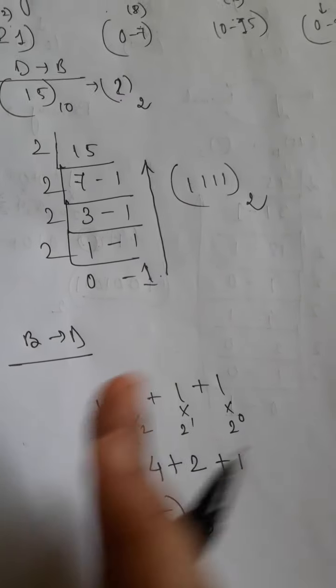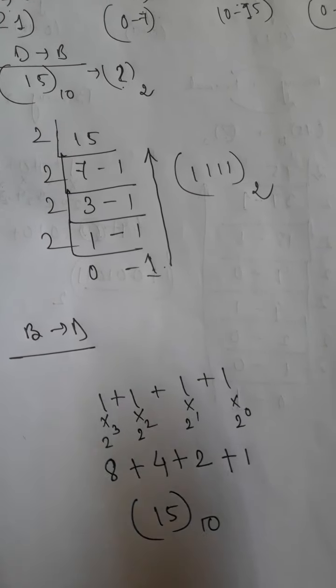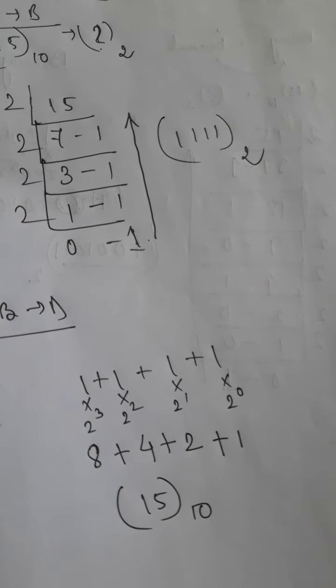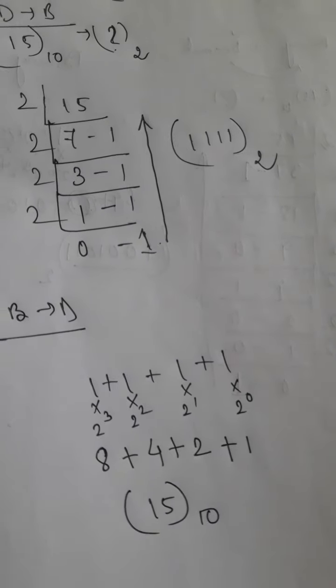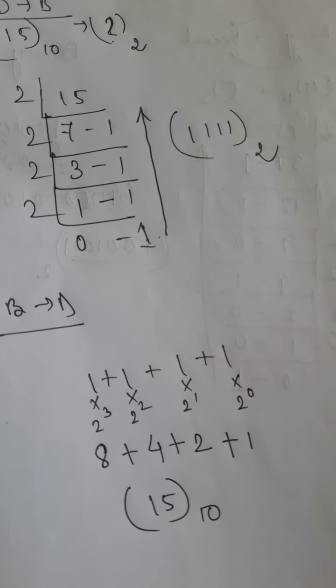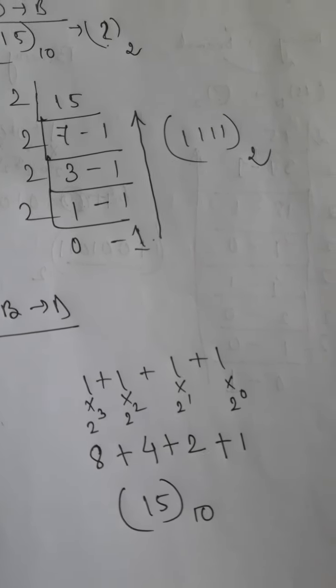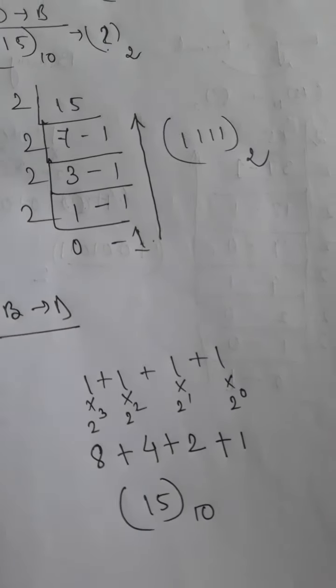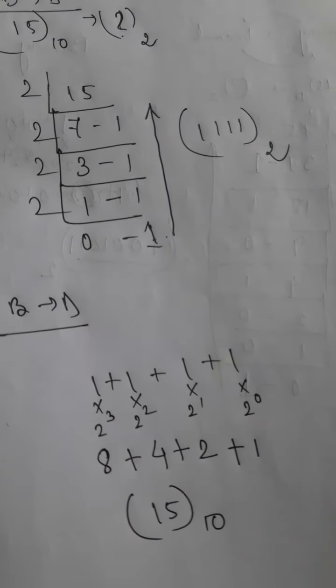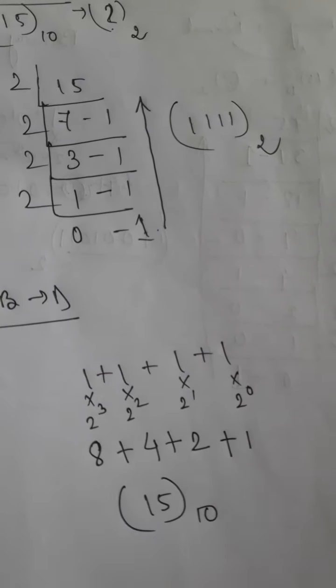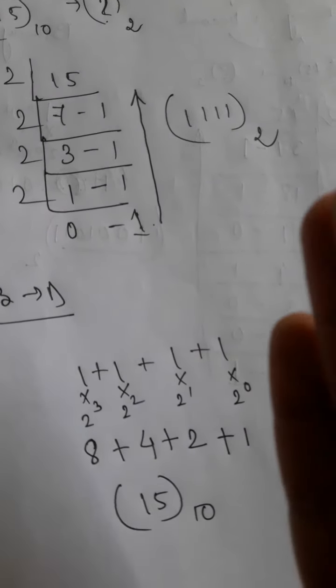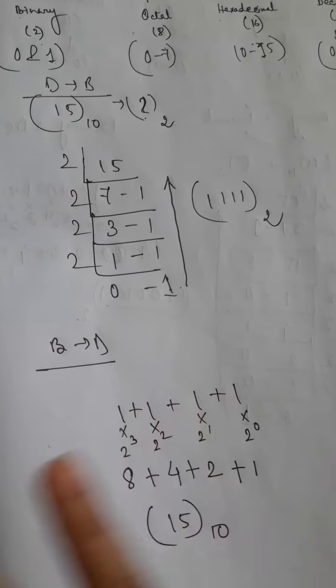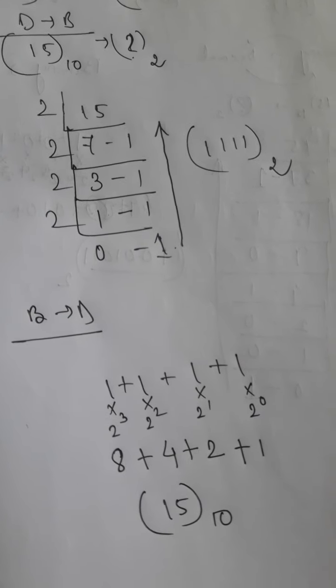In case of binary to decimal conversion, we have to multiply each digit of the binary number with power of 2 as the base of binary is 2. We will start this multiplication process from right to left. The rightmost value will be 2 to the power 0, then 2 to the power 1, then 2 to the power 2, 2 cube and so on. This is the complete conversion of decimal to binary and binary to decimal. Thank you.